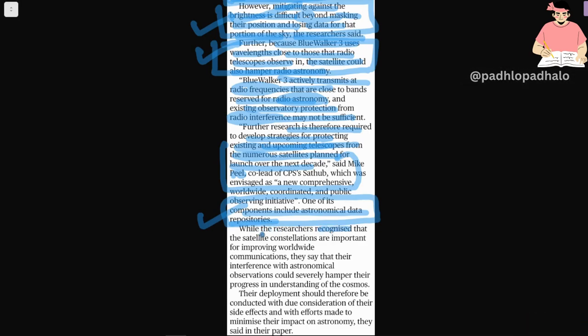While the researchers recognize that satellite constellations are important for improving worldwide communication, they say that their interference with astronomical observations could severely hamper progress in understanding the cosmos. Their deployment should therefore be conducted with due consideration of the side effects and with efforts made to minimize the impact on astronomy, they said in their paper.